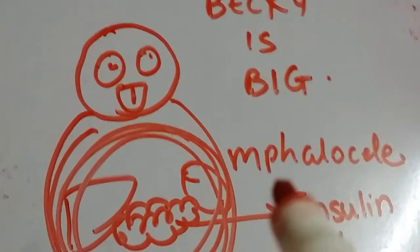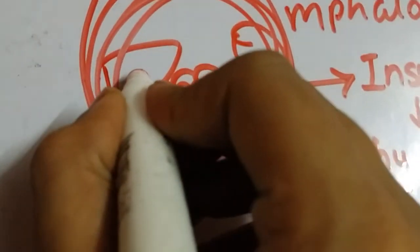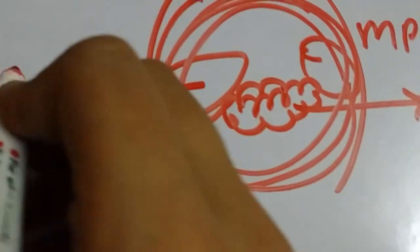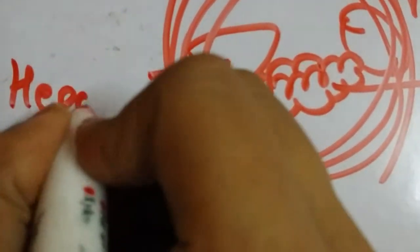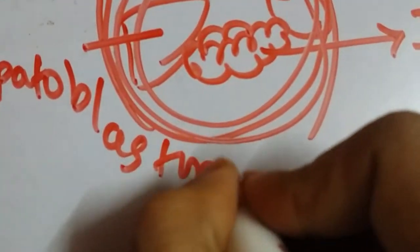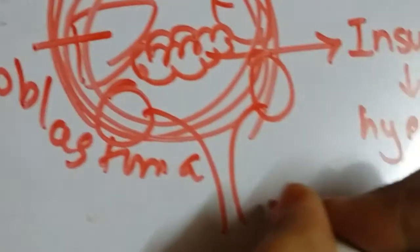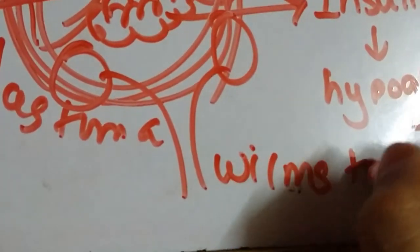Becky is big and she likes to get bigger, so there's an increased risk for hepatoblastoma and other tumors like Wilms tumor of the kidney and gonadoblastoma.